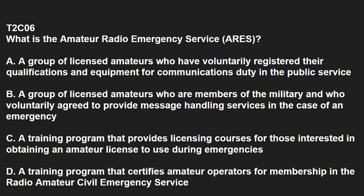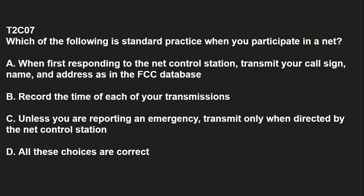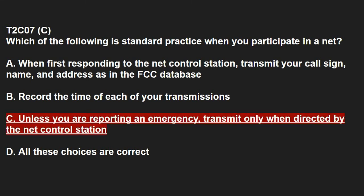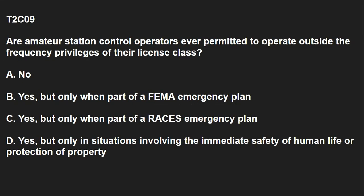T2C06: What is the Amateur Radio Emergency Service, also known as ARES? A group of licensed amateurs who voluntarily registered their qualifications and equipment for communications duty in the public service. T2C07: Which of the following is standard practice when you participate in a net? Unless you are reporting an emergency, transmit only when directed by the net control station. T2C08: Which of the following is a characteristic of good traffic handling? Passing messages exactly as received. T2C09: Are amateur station control operators ever permitted to operate outside the frequency privileges of their licensed class? Yes, but only in situations involving the immediate safety of human life or protection of property.